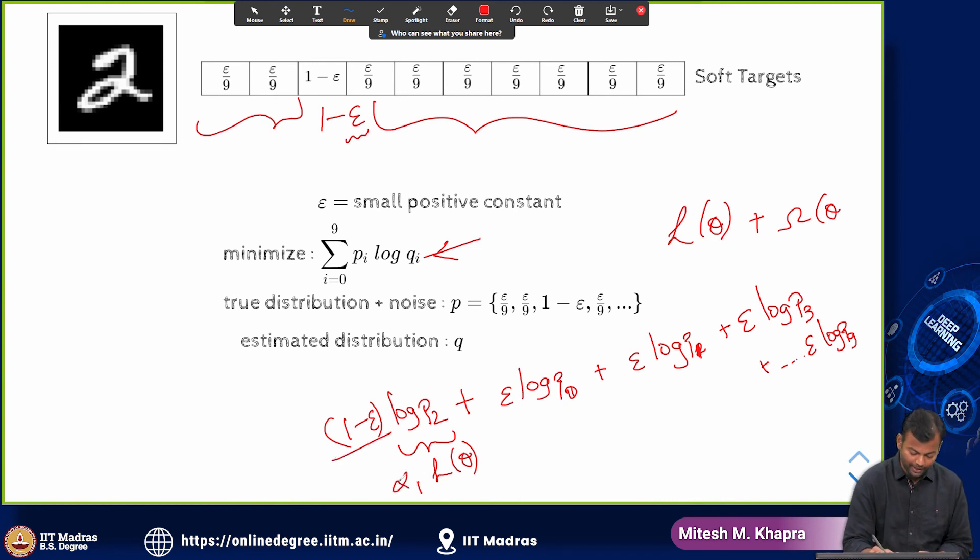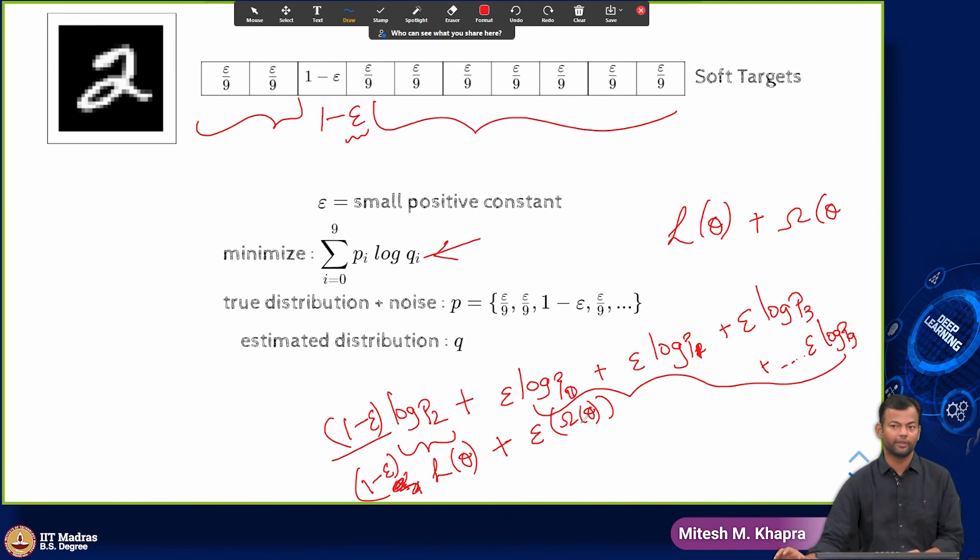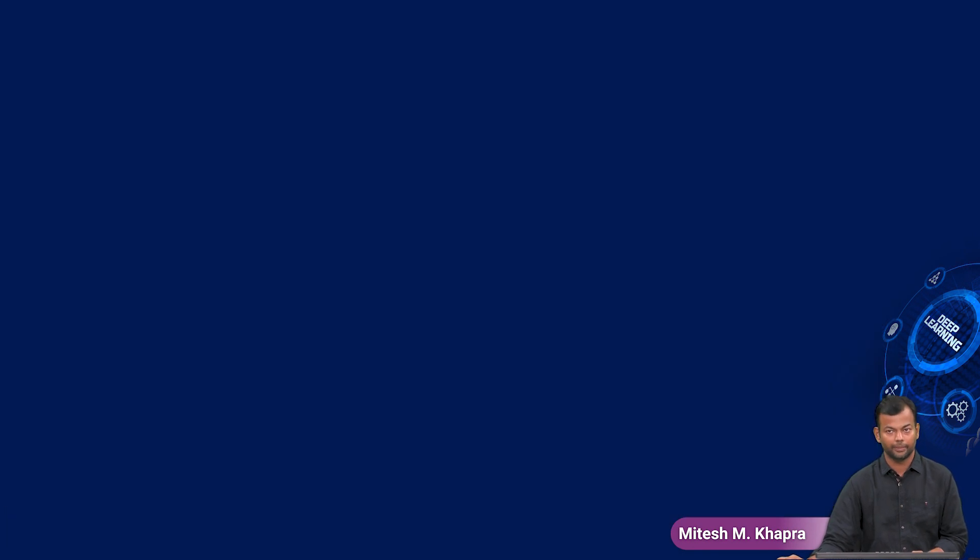Let me just call it as alpha 1 L theta where alpha 1 is 1 minus epsilon and then you have plus or let me just call it 1 minus epsilon. So you have 1 minus epsilon times your earlier loss plus epsilon times some other loss which I can call as omega theta now. Again you can see that you are doing some kind of a regularization here and that will help avoid overfitting. That is the idea behind adding noise to the output labels.